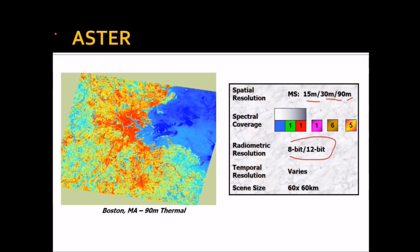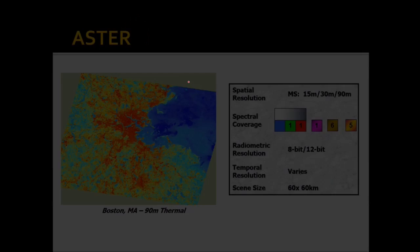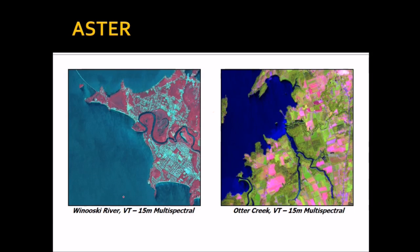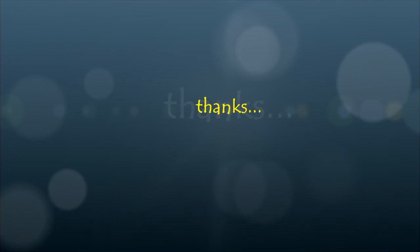Landsat 7 multi-spectral image is at 30-metre resolution. ASTER data is available at 15 metres, 30 metres, and 90 metres multispectral. Radiometric resolution is quite good and the scene size is 60 km by 60 km. ASTER is the Advanced Spaceborne Thermal Emission and Reflection Radiometer, mounted on the Terra satellite — a combined effort of America and Japan. It provides quite good images at 15-metre resolution.